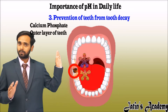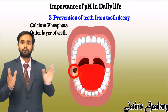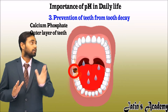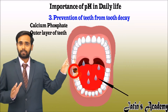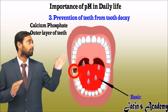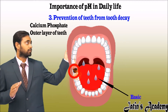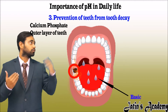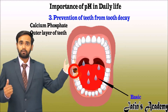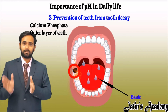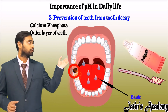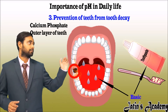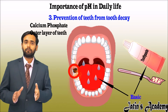Since acid is present in our mouth, we need to neutralize it. The saliva in our mouth is alkaline in nature and converts some of the acid to neutral. But because of too much sugar, we need to add an extra base. The toothpaste we use in daily life is actually a base, so we should brush our teeth before going to bed.